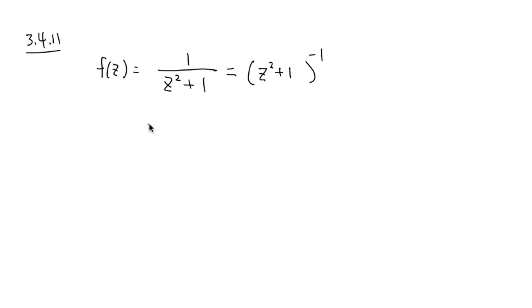So my outside function, which is my red f, is going to be box to the negative 1 power, and my g function, which is the inside function, is going to be z squared plus 1.